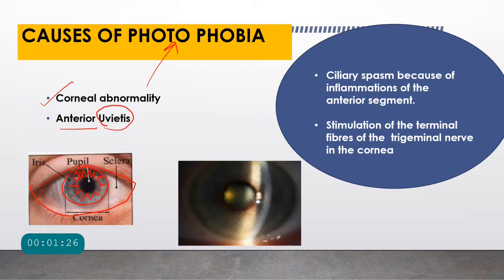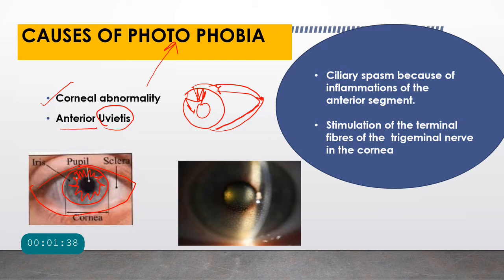Let me briefly explain the anatomy of the uvea. The uvea is composed of the iris, which continues with the ciliary body, and posteriorly the choroid — the middle layer of the eyeball. Whenever there is an abnormality in the anterior uveal tract, meaning the iris and the ciliary body, and those structures become inflamed, that is called uveitis, and in that condition the patient will have photophobia. So the two conditions associated with photophobia are corneal abnormality and anterior uveitis.